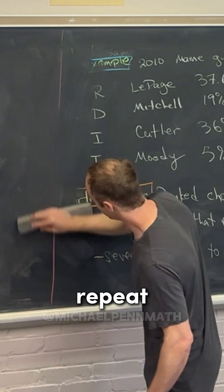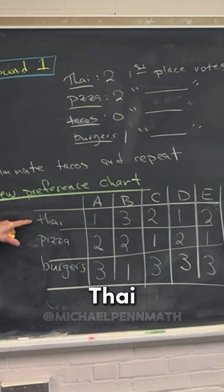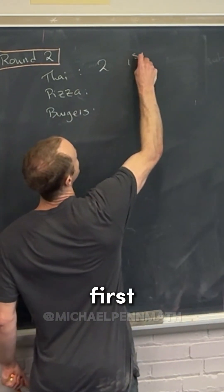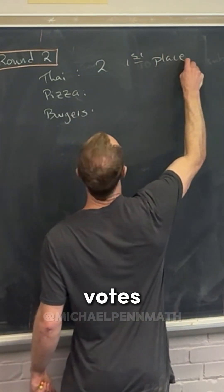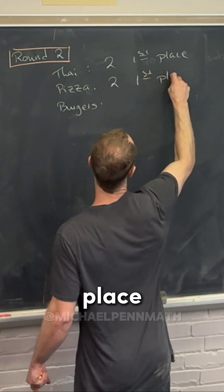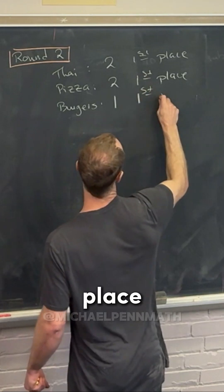And then we're simply going to repeat it. So now Thai food gets two first place votes, right? So two first place votes. Pizza gets how many first place votes now? Two first place. And then burgers gets one first place.